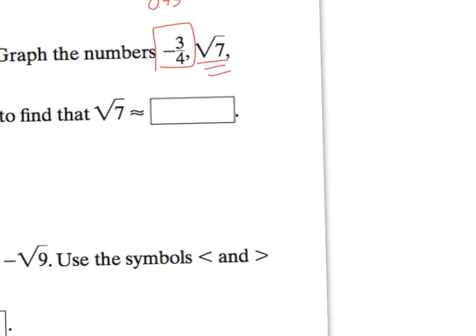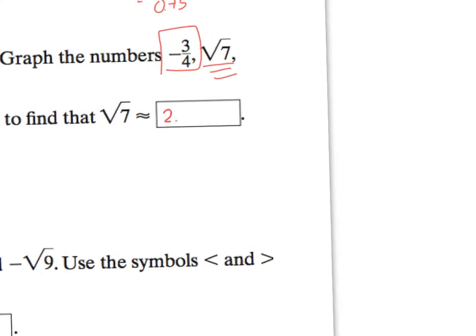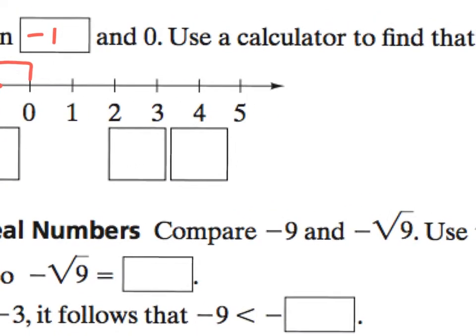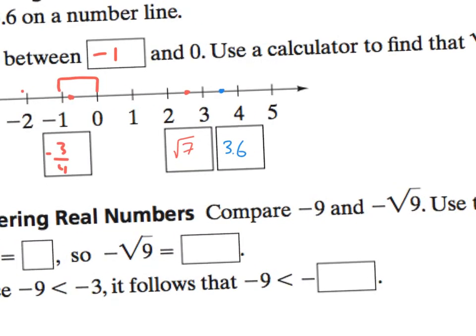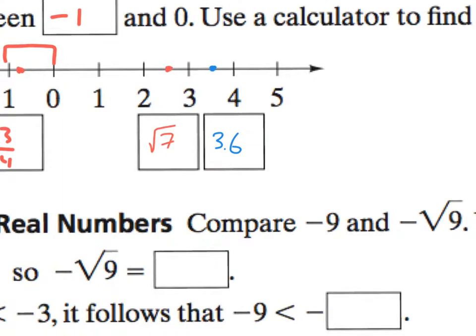Next, radical 7 is approximately 2.65. Of course, that keeps going. So we know that radical 7 is somewhere here between 2 and 3. So 2.6 would work there. And lastly, 3.6 is clearly right there. So now we can see which one of these is the smallest, which one is the largest. And if we were asked to do a comparison, we could say negative 3 fourths is less than radical 7, which is less than 3.6.